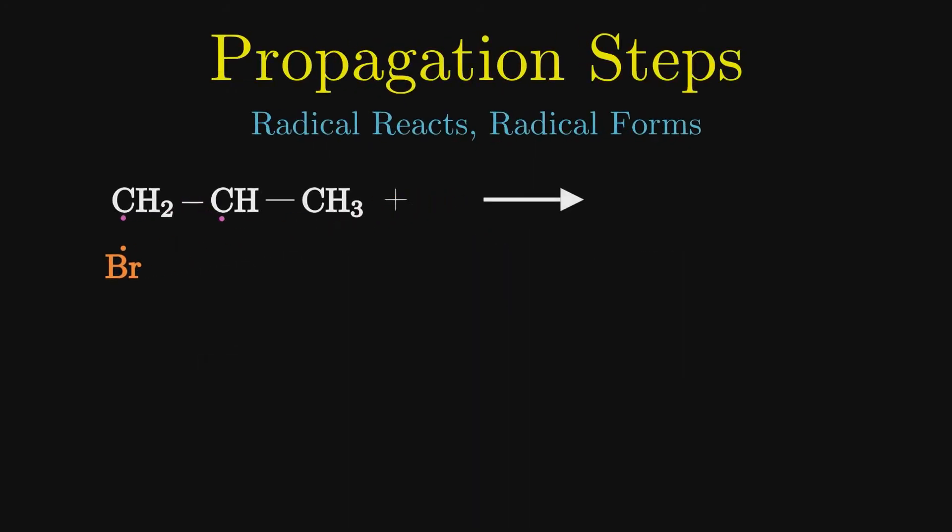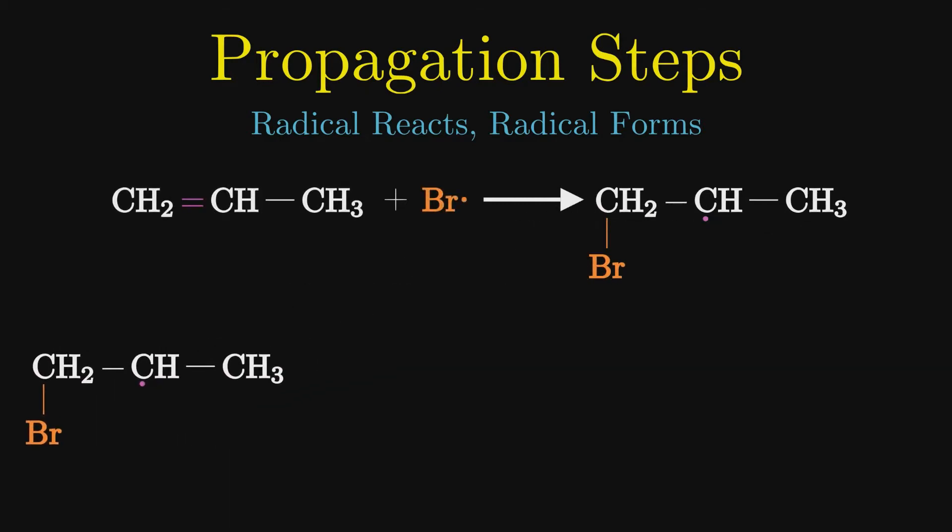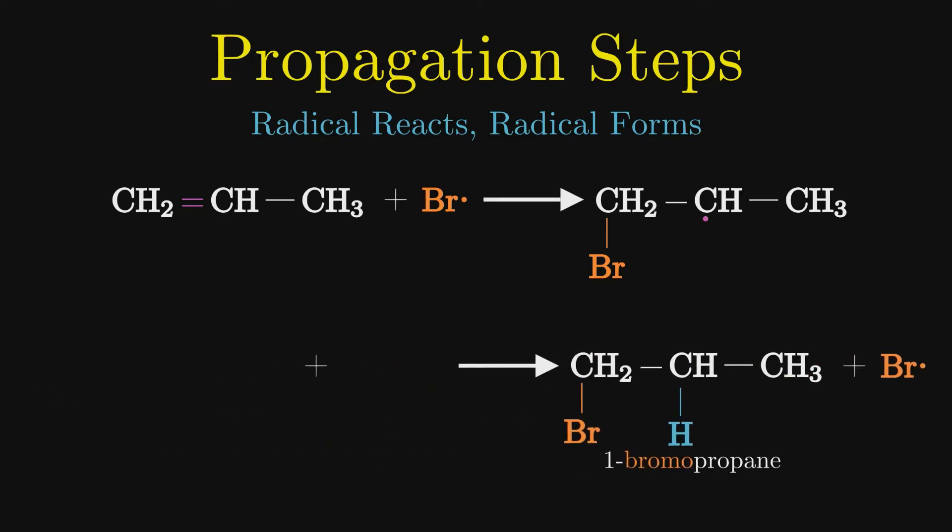During propagation, propene reacts with this bromine radical to produce an alkyl bromide radical. This alkyl bromide radical then reacts with HBr to produce the expected bromoalkane product and another bromine radical.